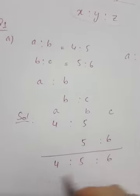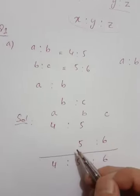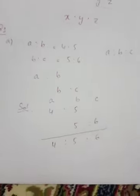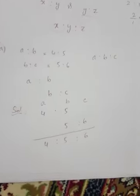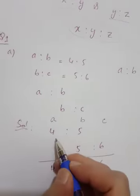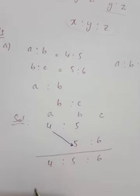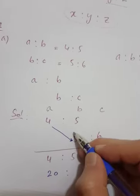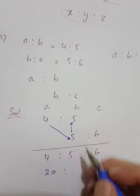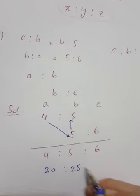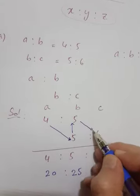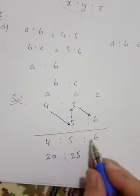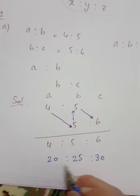But if one number is different, we need to try to make them the same. We do this by multiplying. If we multiply by a number, 4 times 5 equals 20, and if we multiply by that same number, 5 times 5 equals 25.